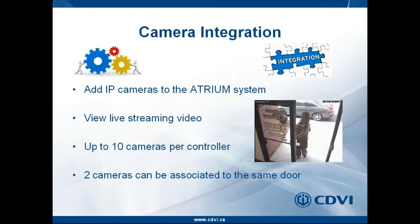IP camera integration — at a basic level, Atrium allows you to view the person at the door through the Atrium web browser. For example, if a pizza delivery man rings the doorbell, you can connect to the system and see who is there. You will be able to view live streaming video using an Motion JPEG stream, and depending on the resolution and frames per second, you can see a live stream of the person at that door.